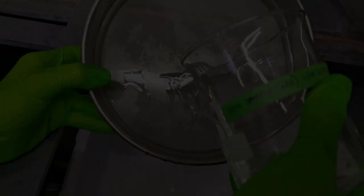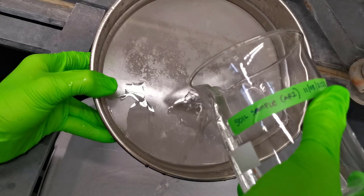For sieving, pre-wet a sieve of mesh size of at least 35 micrometer which will hold the nematodes. Pour the nematode suspension on the sieve, letting the water pass but trap the nematodes on the mesh.